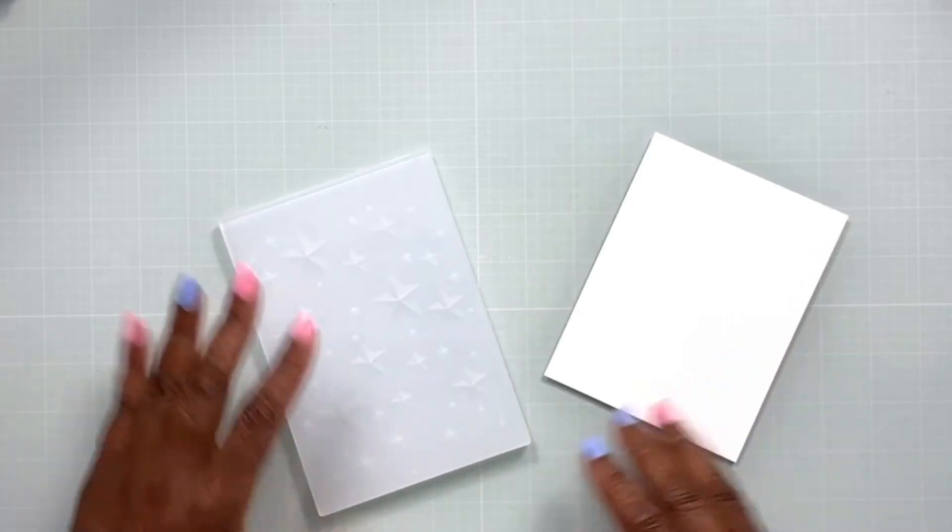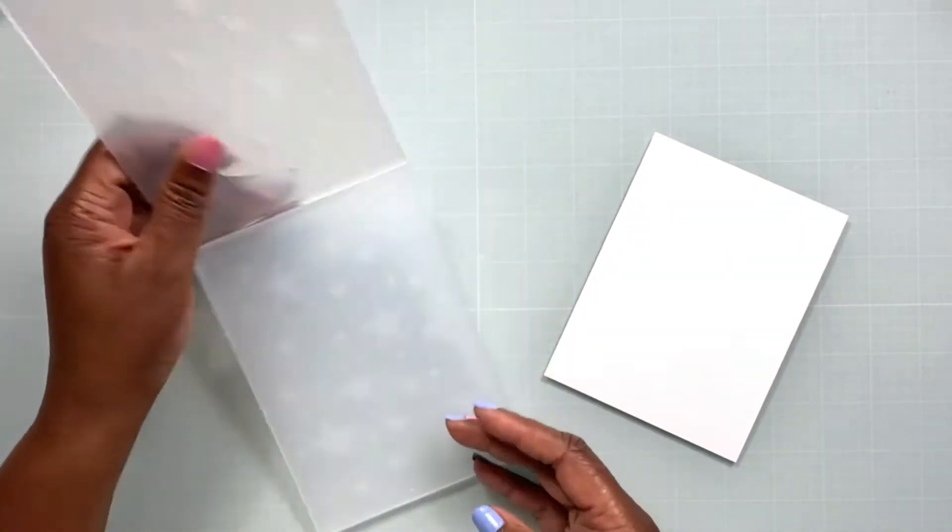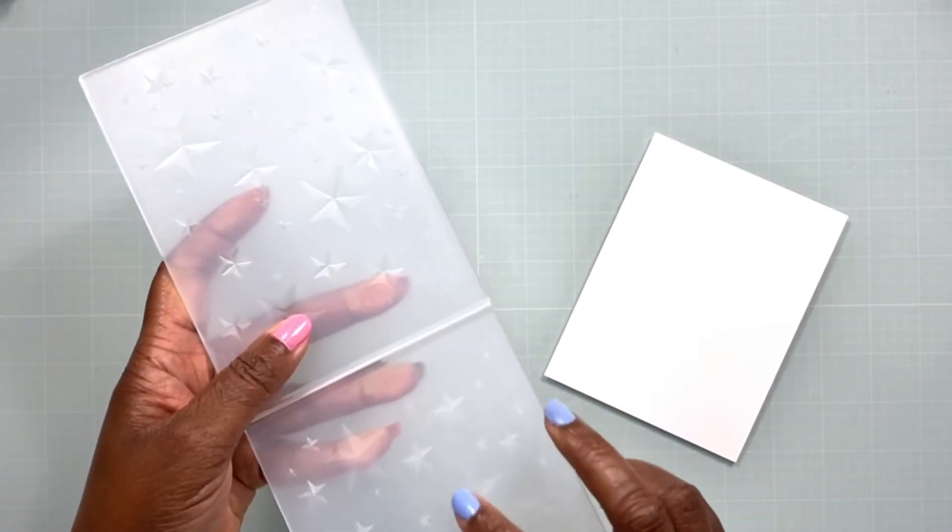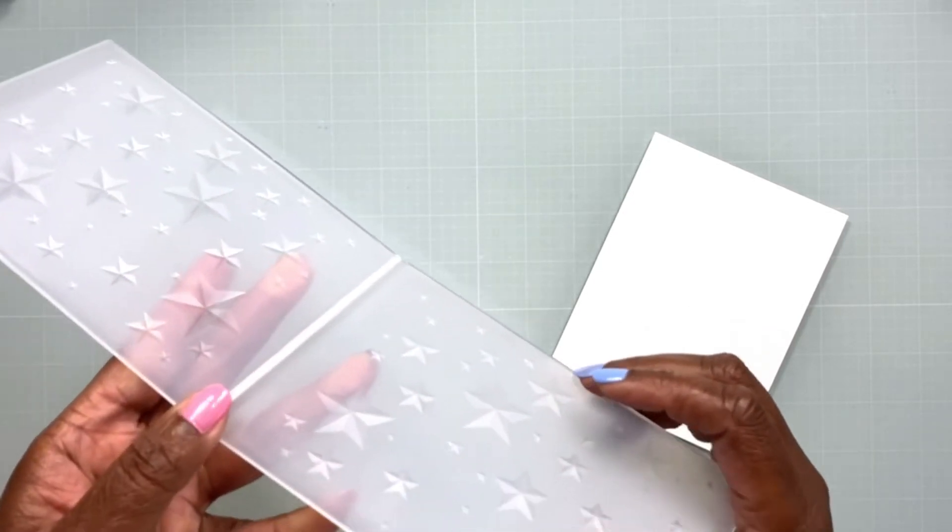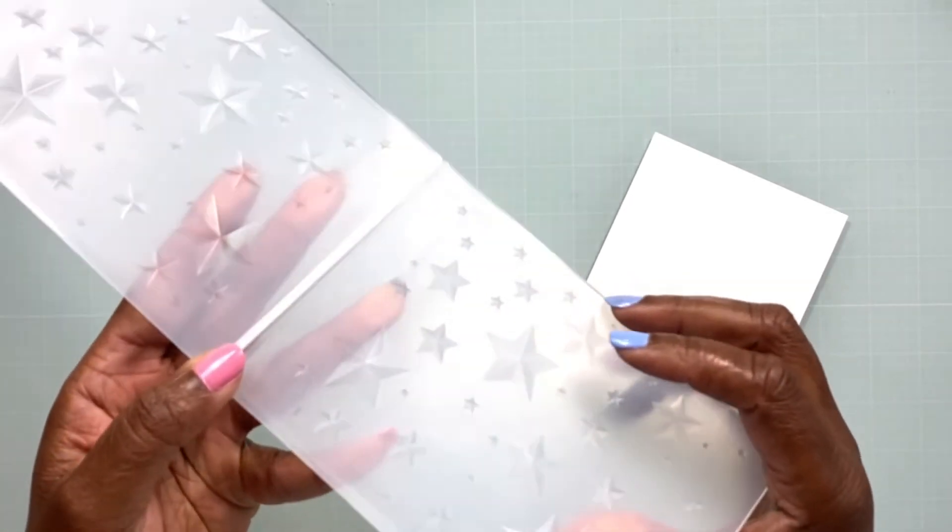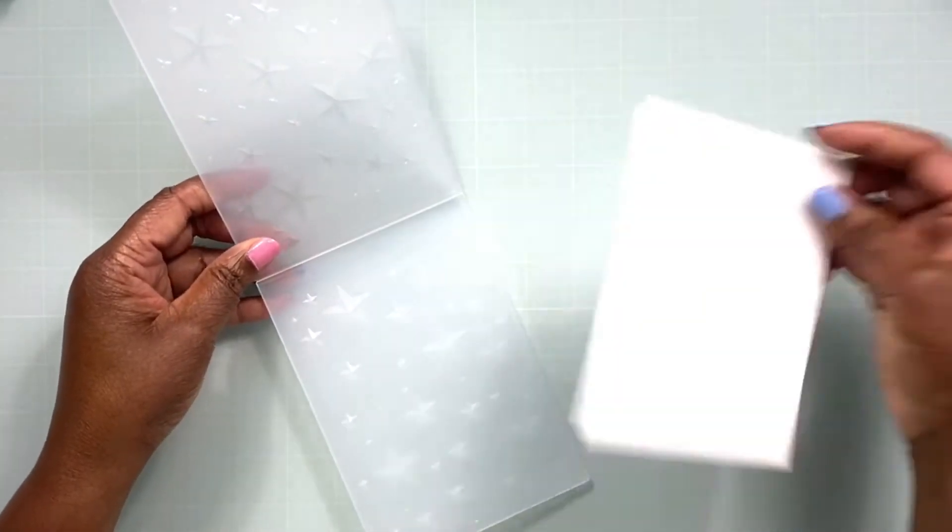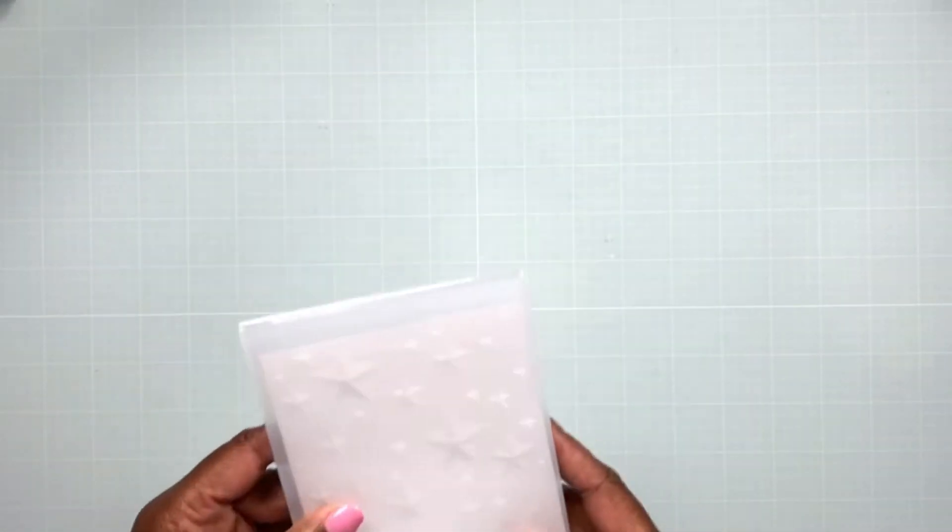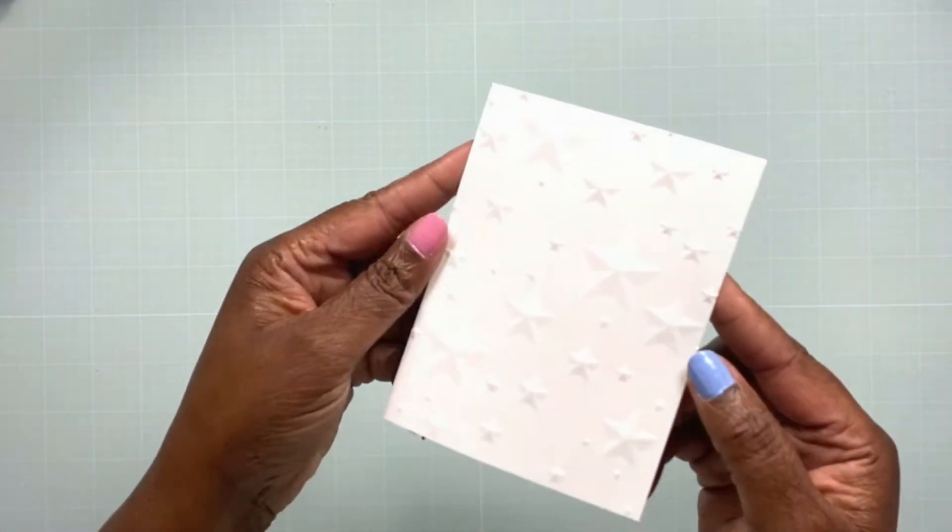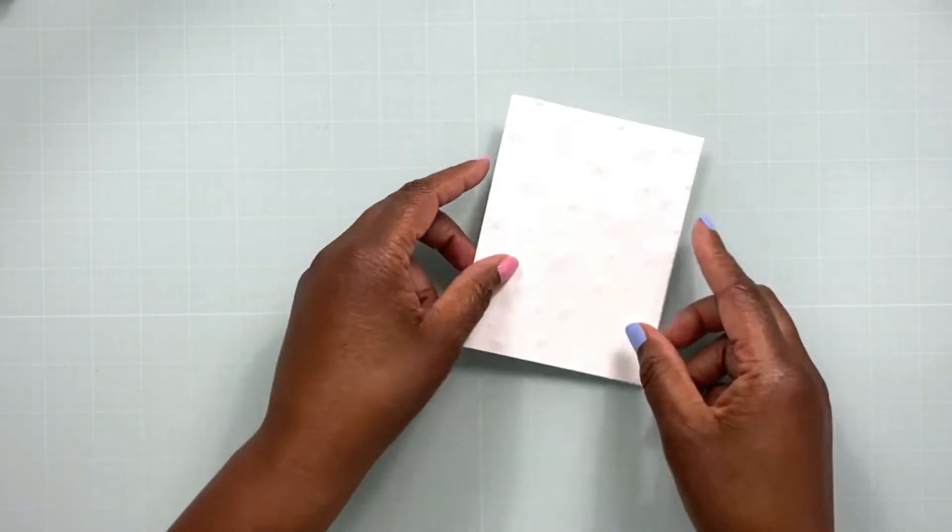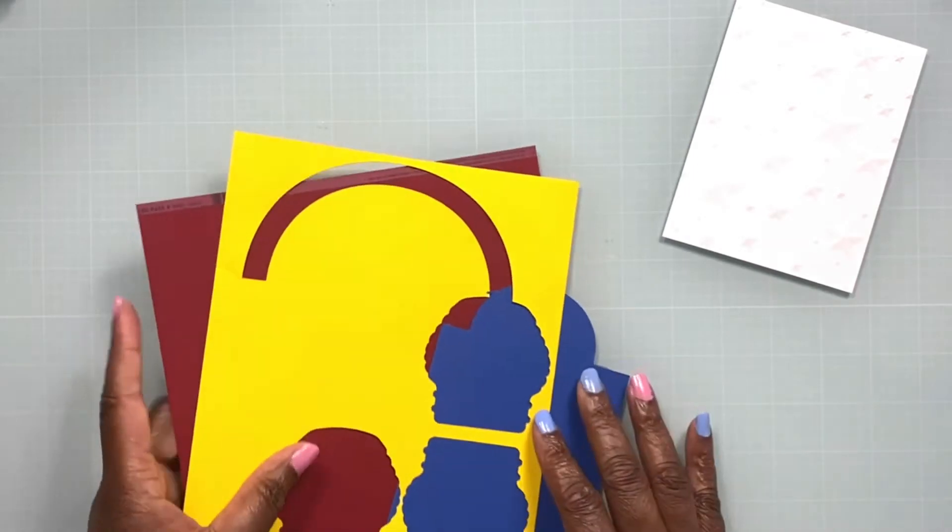So I want to go ahead and create my background first. This particular card creation is going to be all die cuts—there is no stamping on this card. To create some dimension and texture, I'm using this 3D embossing folder that has so much depth to the stars, and I really like that. That's going to add a lot to my background.